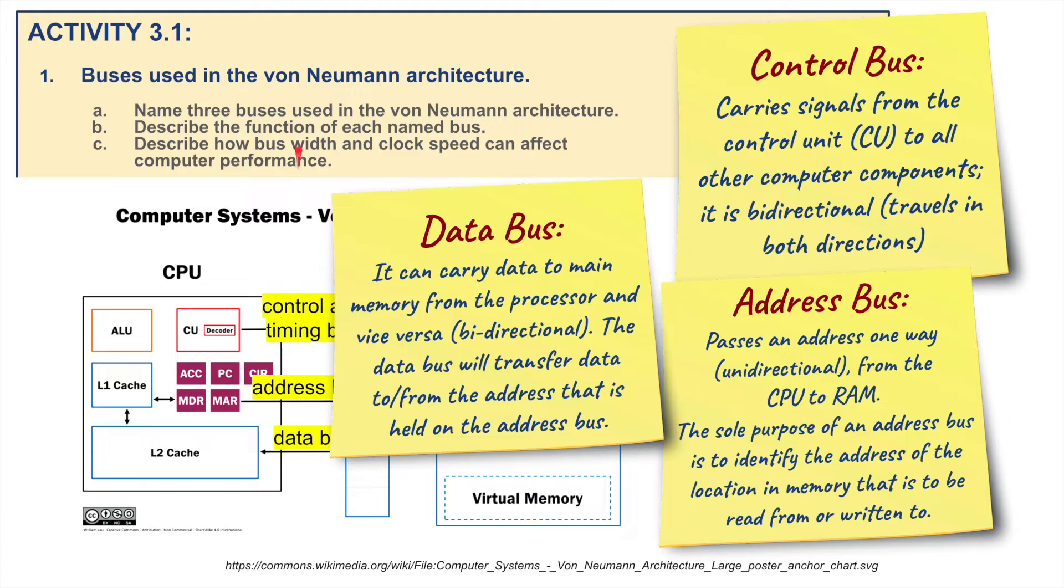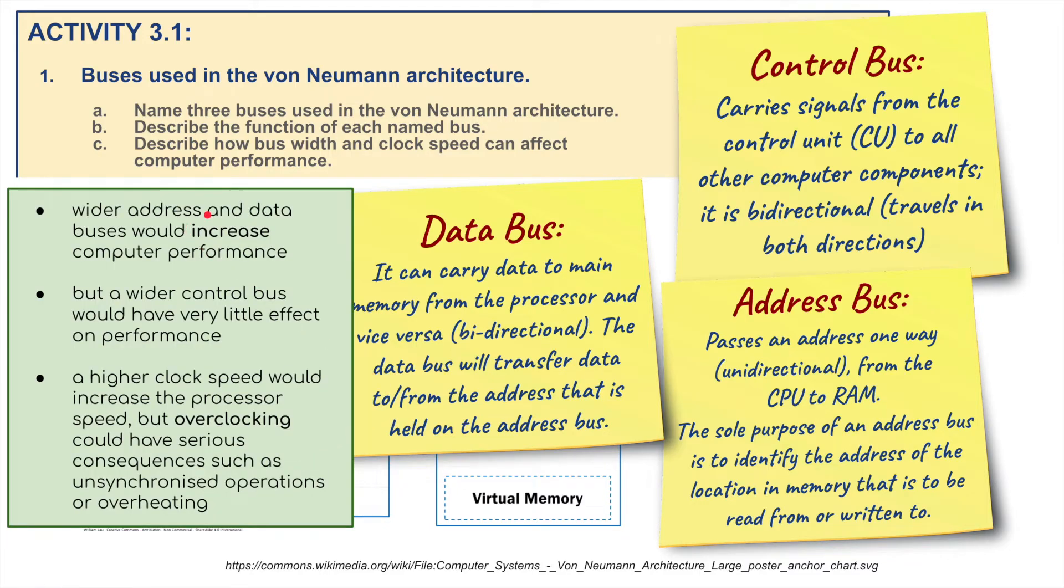Describe how bus width, the width of these buses, and clock speed can affect computer performance. Well let's have a little look. Wider address and data buses would increase the computer's performance, but a wider control bus would have very little effect, probably no effect on the performance. A higher clock speed would increase the processor speed, but, and this has been mentioned before, overclocking could have serious consequences such as unsynchronized operations or overheating.